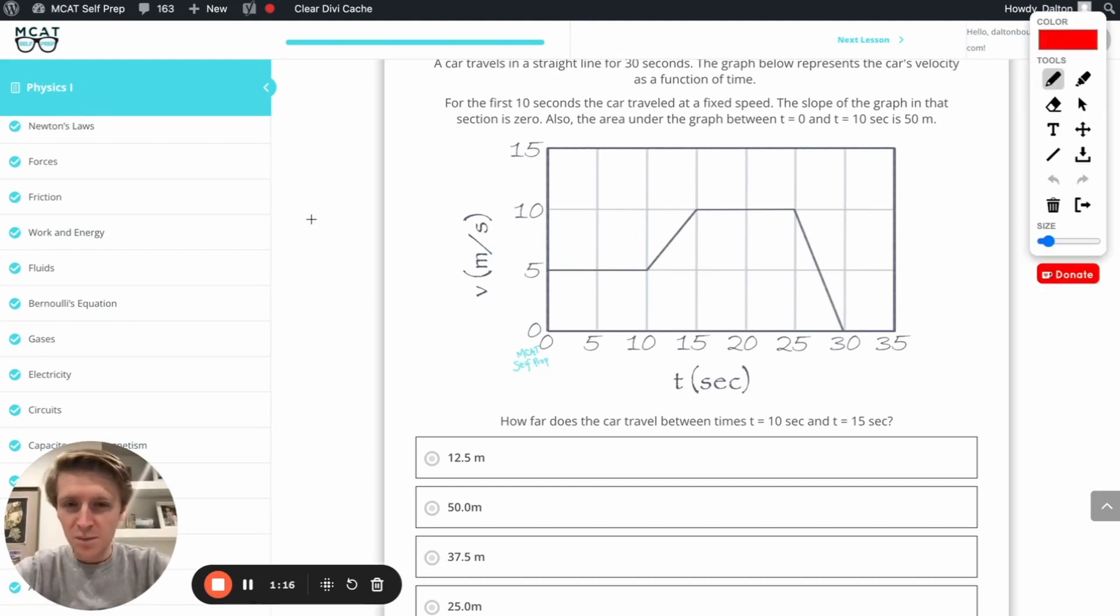All right, so to really ace this problem, we just need to remember that displacement is equal to the area under a velocity versus time graph. So here we have our velocity versus time graph, and if we want to figure out how far this car traveled, we basically want to figure out what the area is under this graph. Now it's specifically asking us for how far the car travels between 10 seconds and 15 seconds.